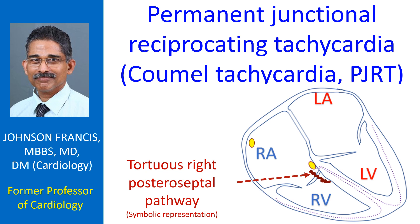Most often, it involves a right posteroseptal accessory pathway. Though it can occur at all age groups, the majority are seen in children and young adults. It is a long RP tachycardia with inverted P waves in inferior leads. As the tachycardia is incessant, there is a chance for development of tachycardiomyopathy.